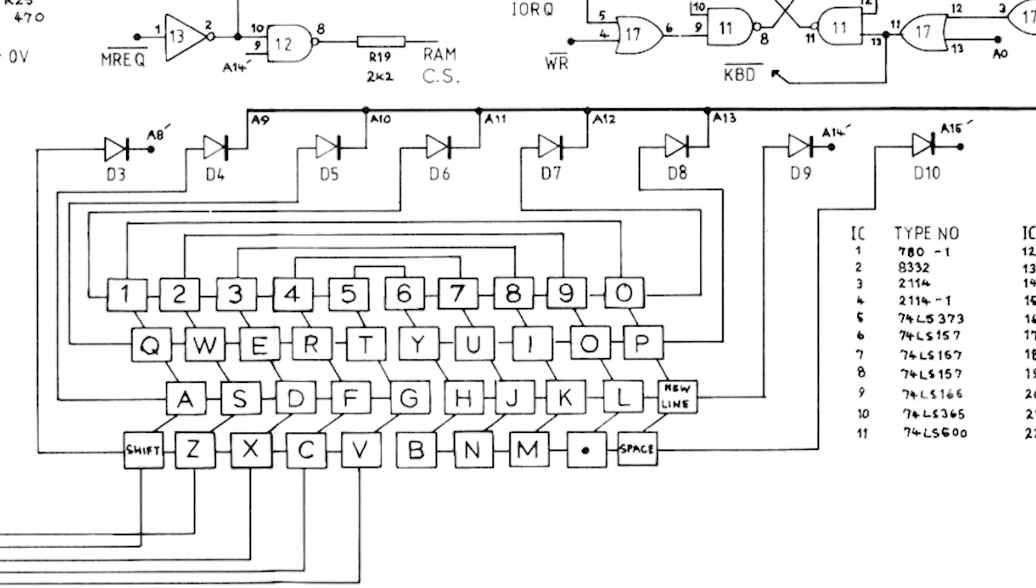The problem occurs when we press two keys together, say Shift and A. Now this is a valid operation, but without diodes, we will short the address lines A8 and A9 together, which is bad.